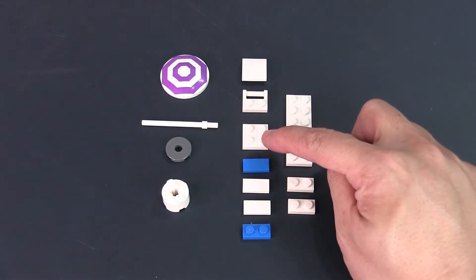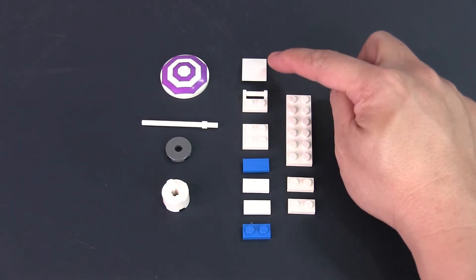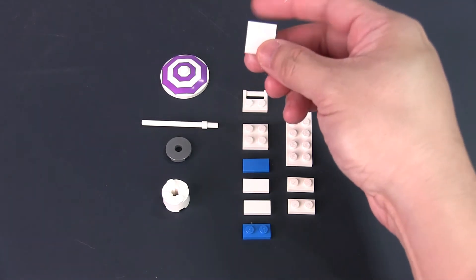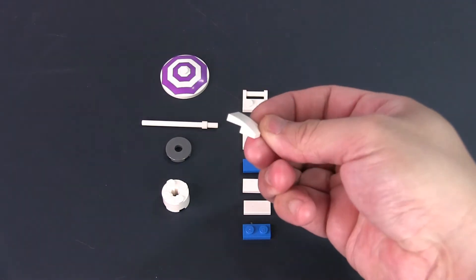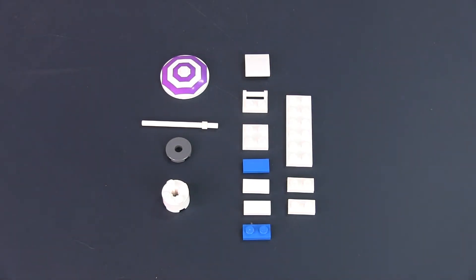You need a 2x2 plate, a modified plate with a bar and a 2x2 curved sloped tile. You can use any colour combination you like but just make sure there are two contrasting colours and I personally like to use white as the base.